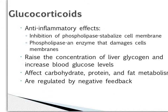Corticosteroids are hormones produced by the adrenal cortex, and there are two types we see in mammals. The first type is glucocorticoids. How these work is they have anti-inflammatory effects and they inhibit phospholipase. Phospholipase is an enzyme that damages cell membranes, and as we saw from the inflammatory pathway slide, glucocorticoids block the damage caused by phospholipase.